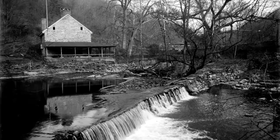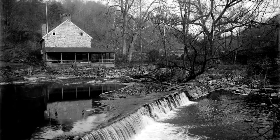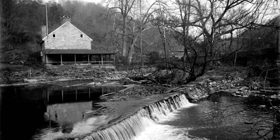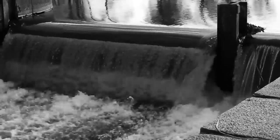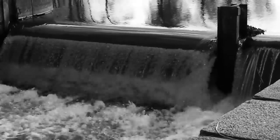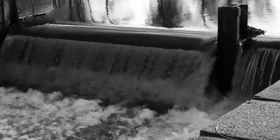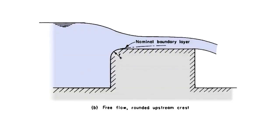A weir is a small dam built across a river to control the upstream water level. Weirs have been used for ages to control the flow of water in streams, rivers, and other water bodies. Unlike large dams, which create reservoirs, the goal of building a weir across a river isn't to create storage, but only to gain some control over the water level.